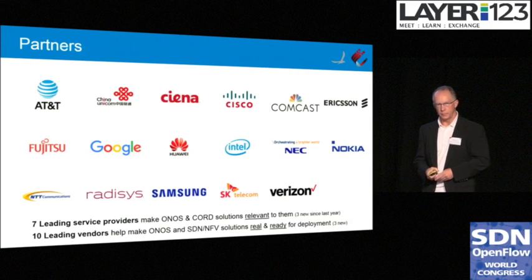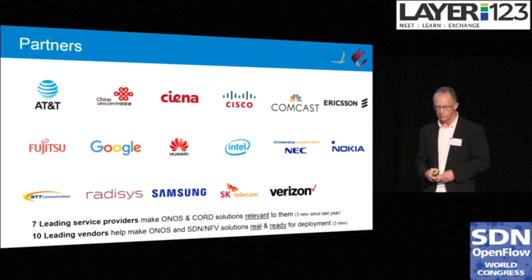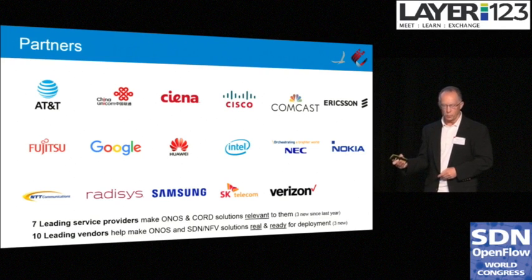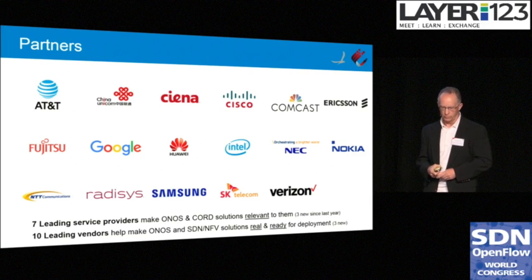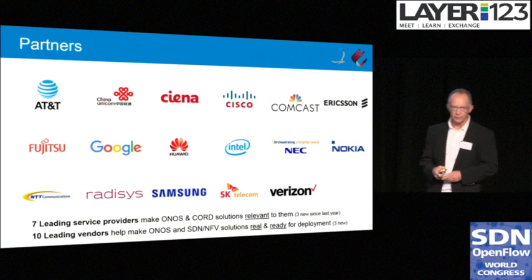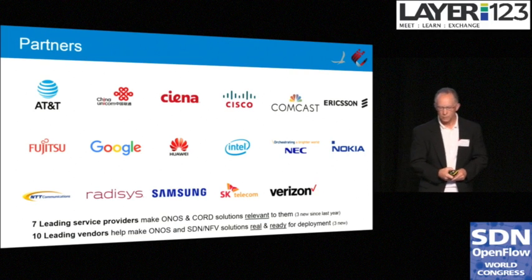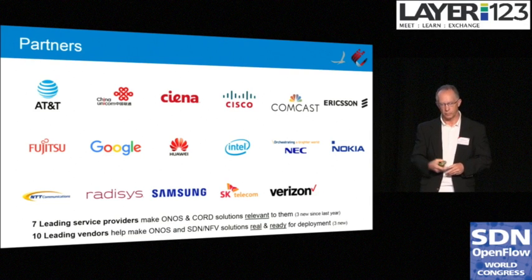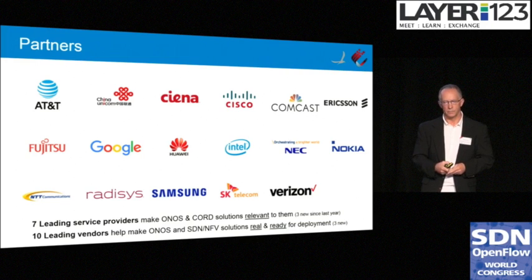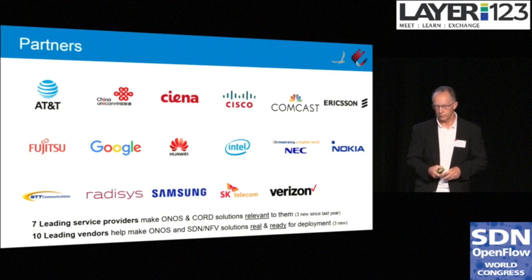We're very fortunate to have partners like these. We have seven leading service provider partners, and the service providers make ONOS and CORD solutions relevant. We also have 10 of the leading vendors for those service providers, and they make the solutions real and ready for deployment. Our most recent service providers added have been Comcast — so now into the cable space — Google, very interesting, and Verizon. So we have a really good mix of service providers that we're working with.